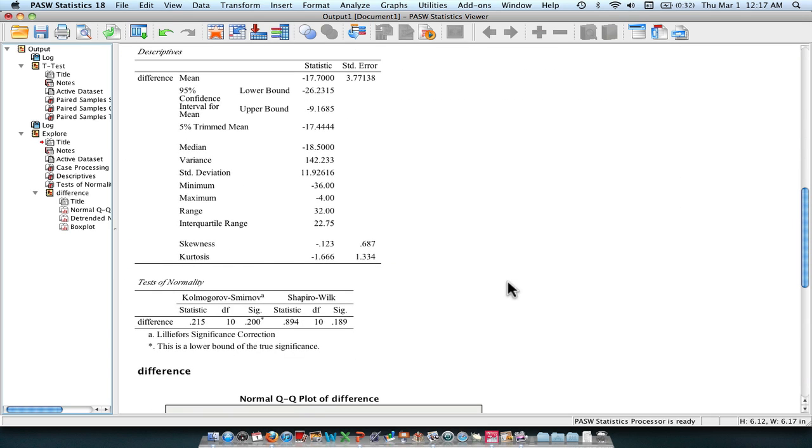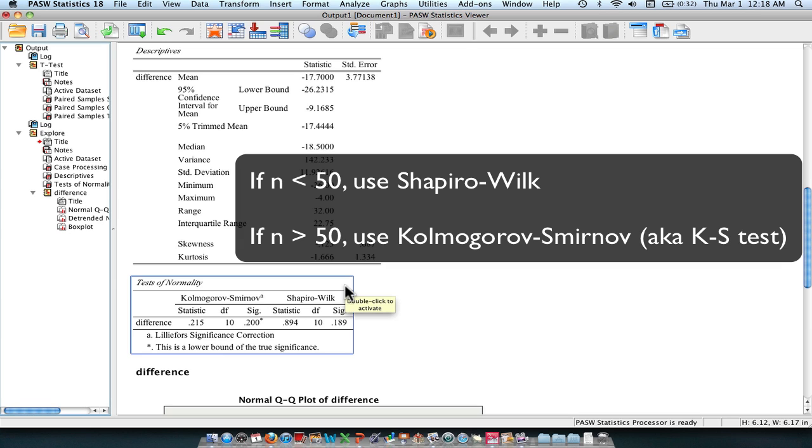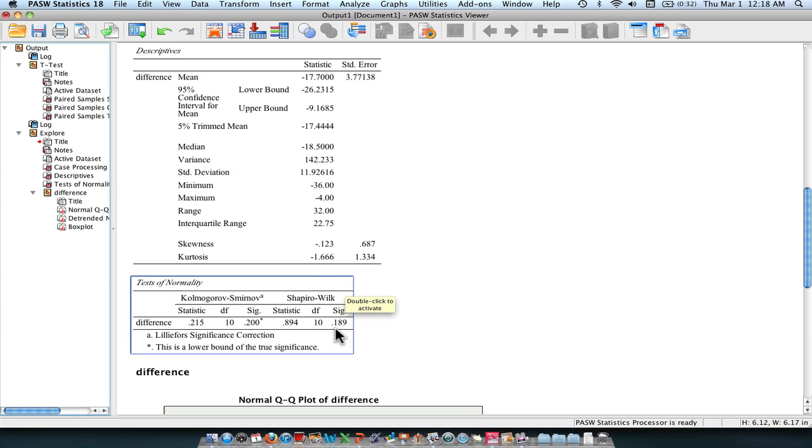What we should get is our test of normality. We need to go ahead and use the Shapiro-Wilk test because we have less than 50 participants. And what this means is it is not statistically significant, which means that our data is normally distributed. So it is not statistically significantly different from a normal distribution. So we're OK. We have met the only underlying assumption of a paired t-test.